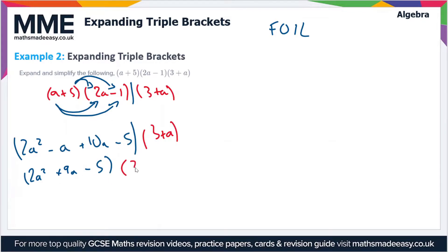We're going to multiply this by (3 + a). Now, 2a² × 3 = 6a². 2a² × a = 2a³. 9a × 3 = +27a.